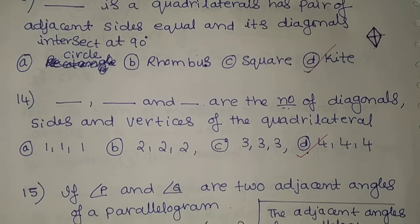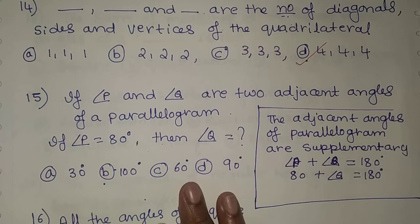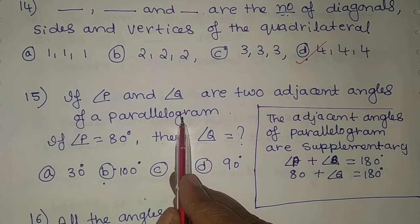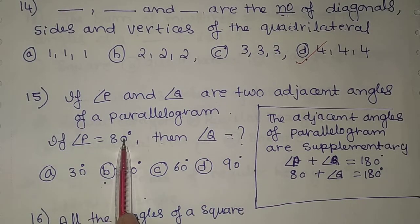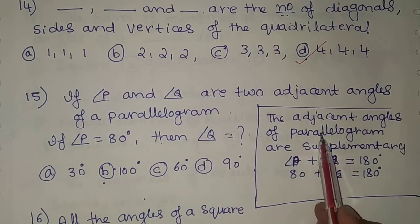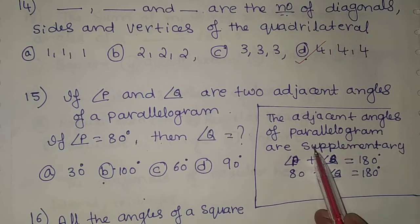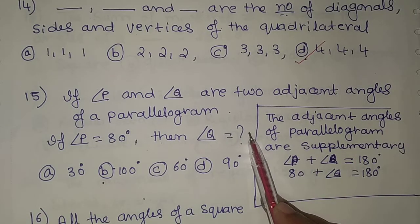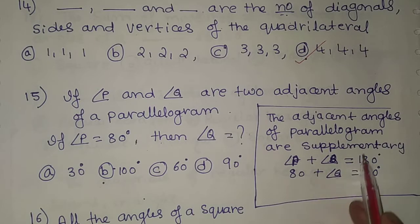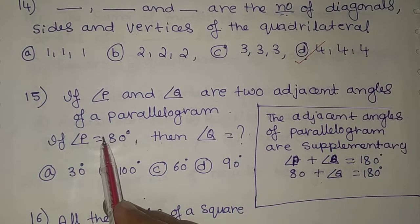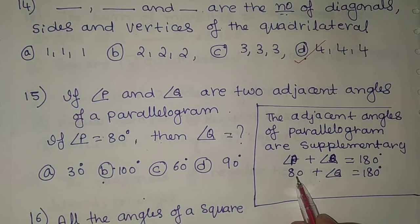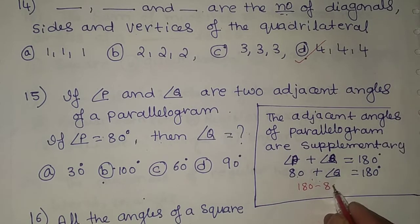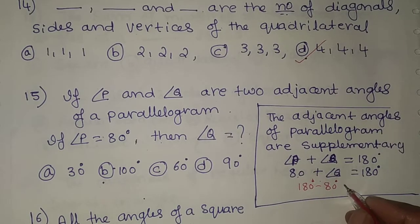The 15th problem: if P and Q are two adjacent angles of a parallelogram and angle P is 80 degrees, find angle Q. Adjacent angles of a parallelogram are supplementary, so angle P plus angle Q equals 180 degrees. Substituting P as 80 degrees: Q equals 180 minus 80.